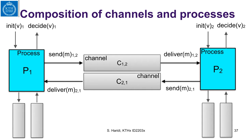Here is an example where we want to compose two processes P1 and P2 with two channels C12 and C21. We have four components and want to put them together into a single automaton. We match output actions of a component automaton with the corresponding input action of another component — for example, matching the send of this component as an output to the send of channel C12 as an input, and we do that for all matching outputs to inputs.